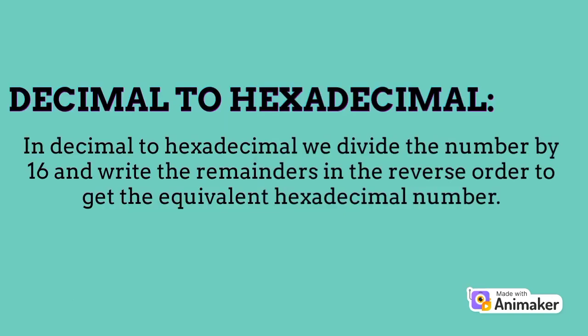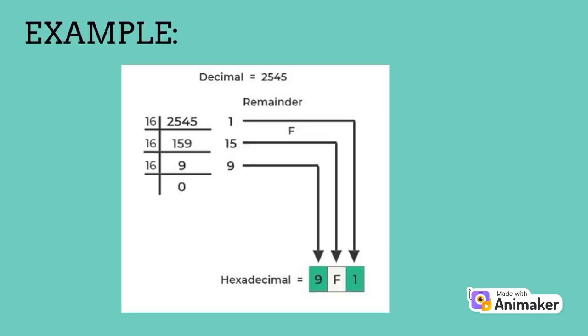Decimal to hexadecimal. In decimal to hexadecimal, we divide the number by 16 and write the remainders in reverse order to get the equivalent hexadecimal number. Here is an example of decimal to hexadecimal conversion.